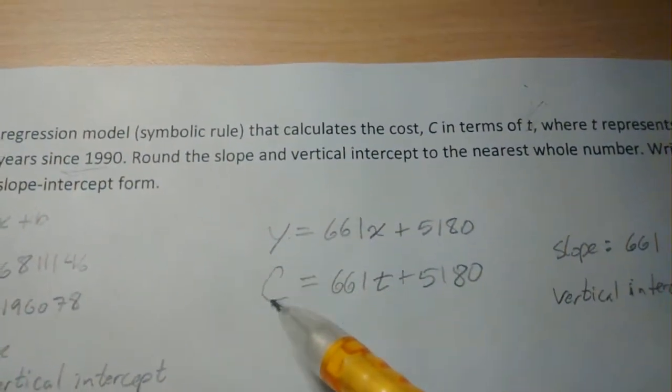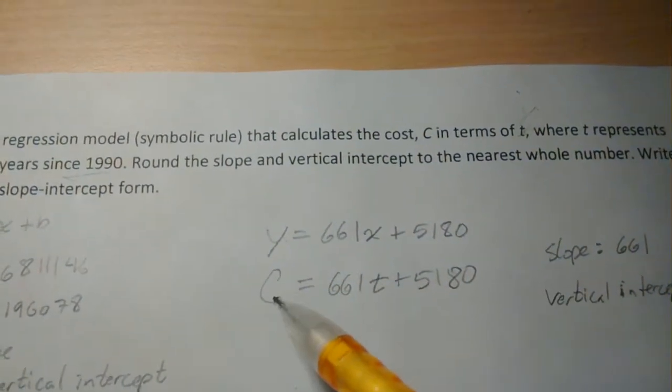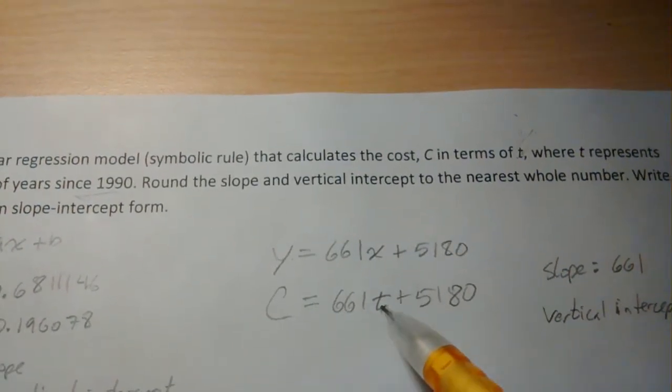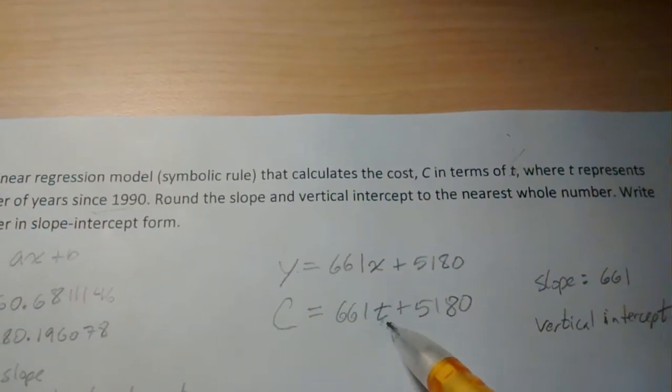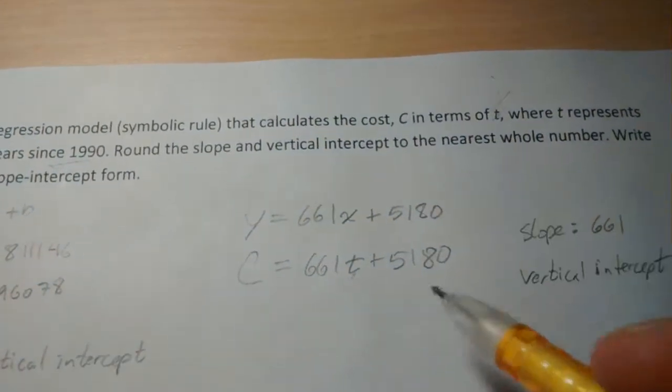So this, my friends, is in slope intercept form, where that's cost in thousands and T here is the number of years since 1990. Okay, so there it is.